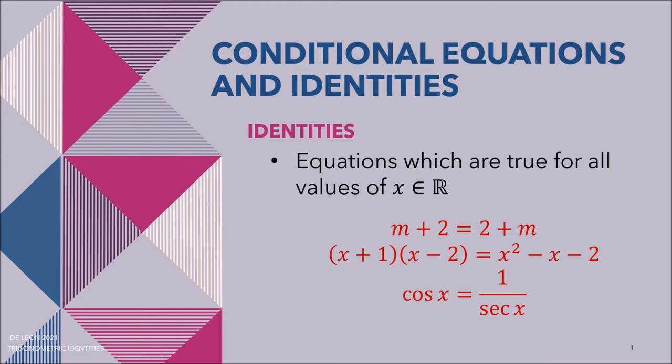Whereas identities are equations which are true for all values of x, element of the set of real numbers. Here are some examples of an identity: m plus 2 equals 2 plus m; the product of x plus 1 and x minus 2 is equal to x squared minus x minus 2; and cosine x equals 1 over secant x.